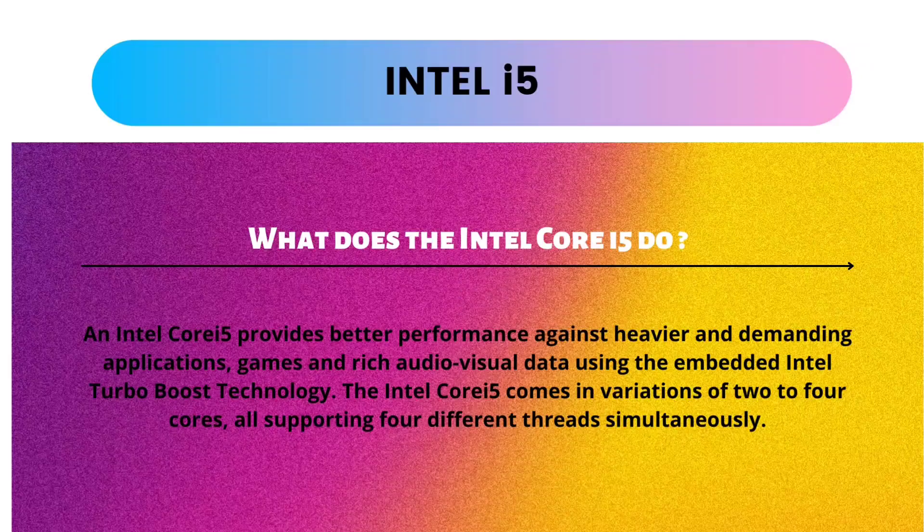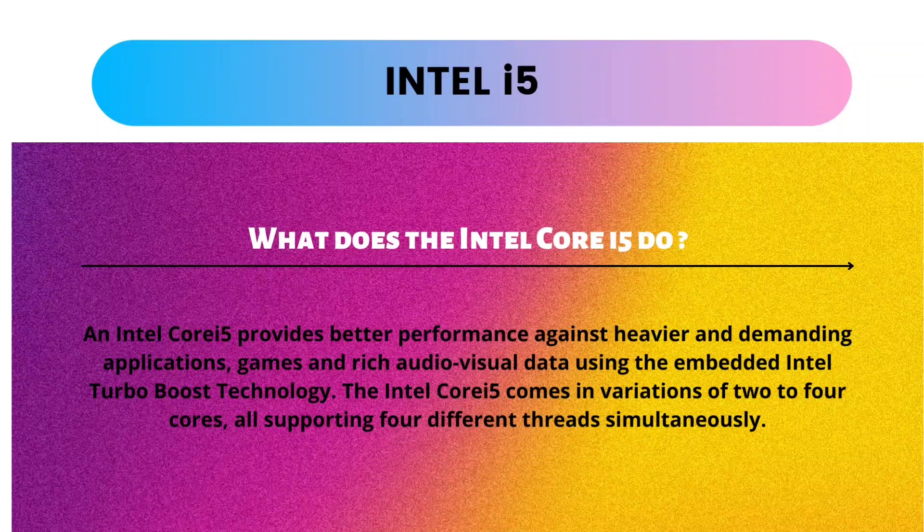What does the Intel Core i5 do? An Intel Core i5 provides better performance against heavier and more demanding applications, games, and rich audio-visual data using the embedded Intel Turbo Boost technology. The Intel Core i5 comes in variations of 2 to 4 cores, supporting up to 4 different threads simultaneously.